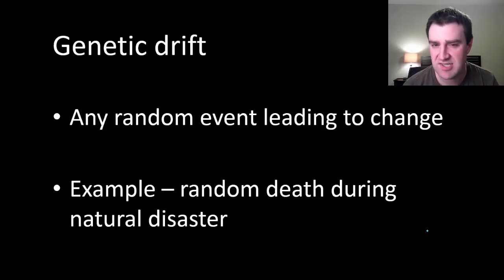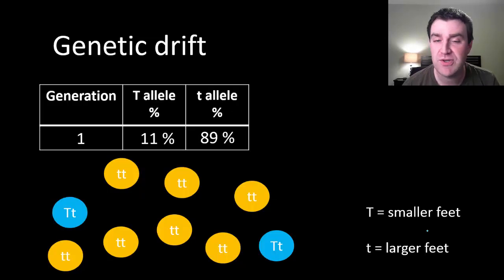We're saying that genetic drift is any time the population gene pool shifts over generations due to random chance events. There are several examples of that. One of them might be the random death of individuals during a natural disaster of some kind.